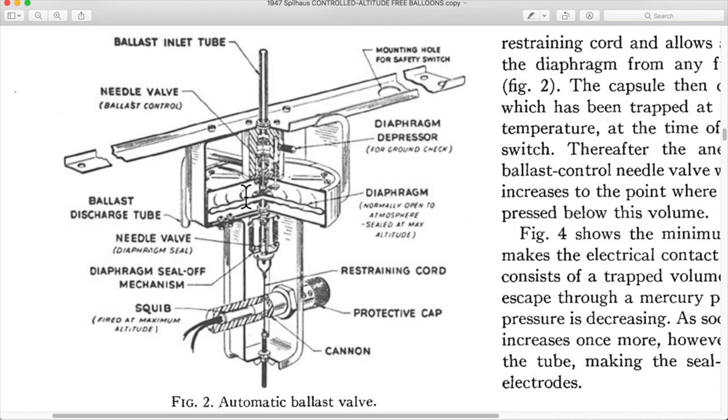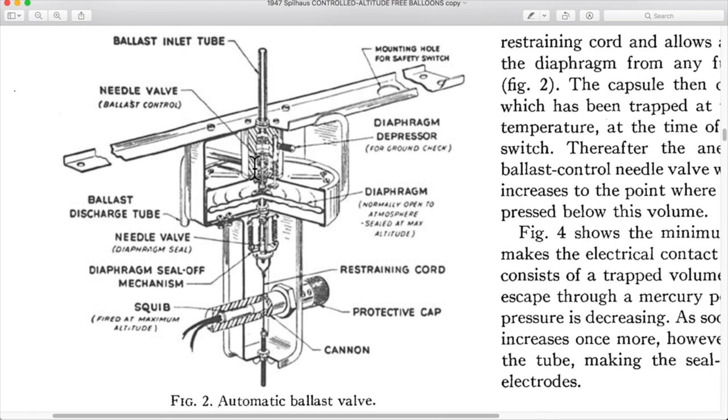So here where we see it says diaphragm, normally open to atmosphere, sealed at max altitude. That is a sealed can, just like we talked about in the last video where the air will be sealed in there. And as the balloon rises, this rippled side of the can will extend outwards. It will bend and bow and expand up and down and push these rods apart. This is a very complicated setup.